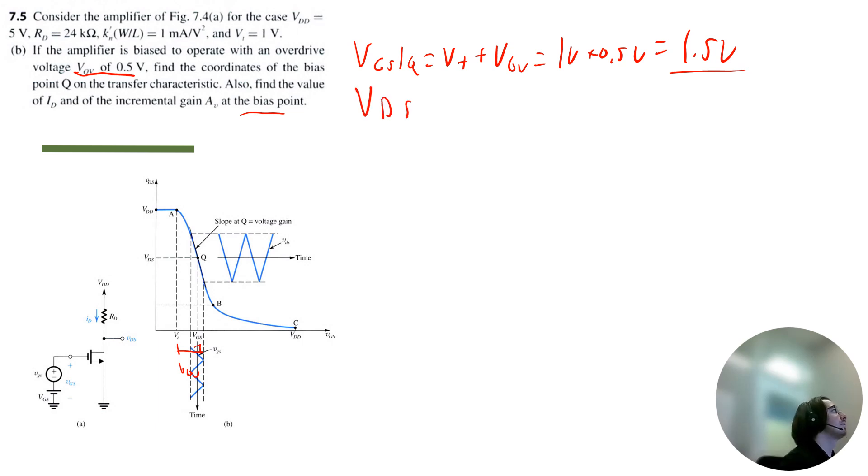The VDS coordinate is equal to, oh, we don't know that yet because it's going to be, if you look at this right here, this is what we're solving for. It's going to be VDD minus ID times RD. And I need to find ID in order to solve that.